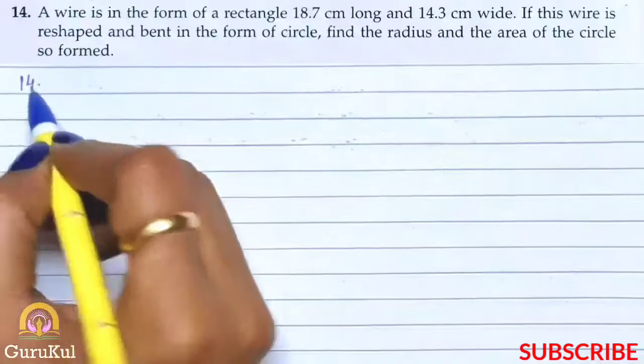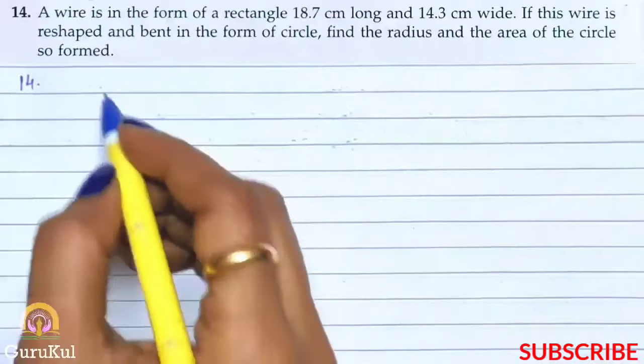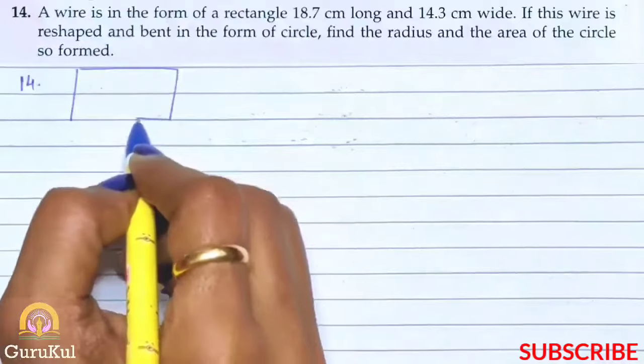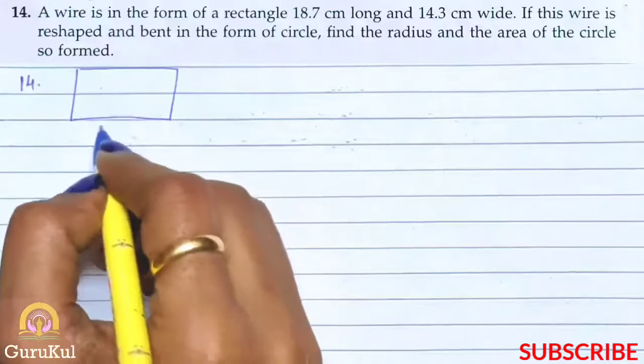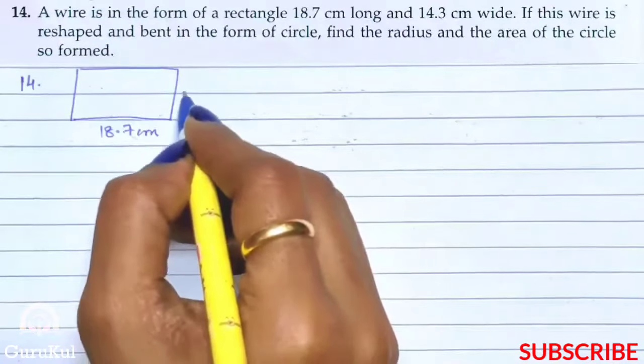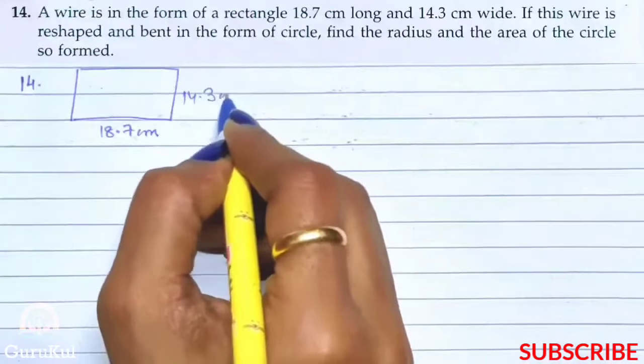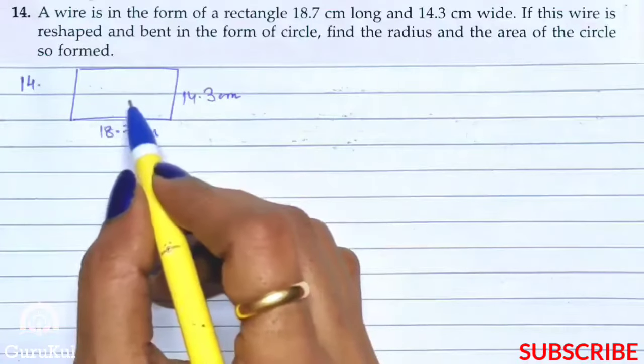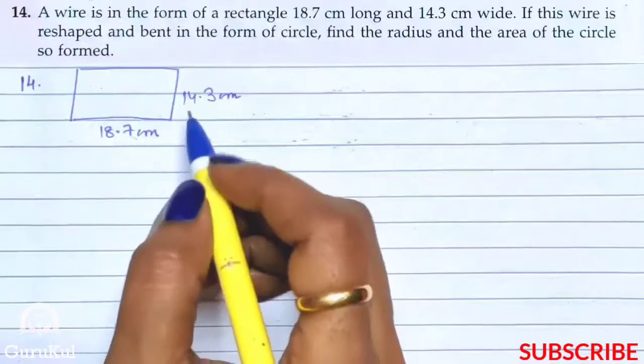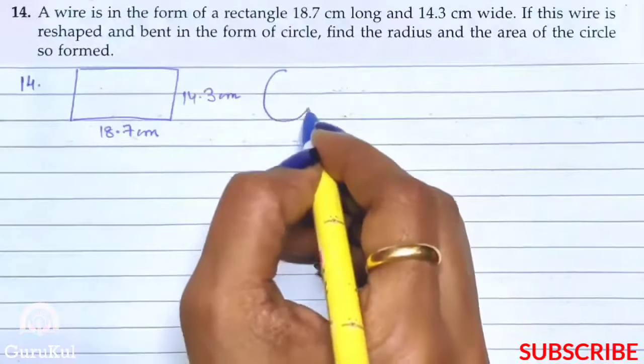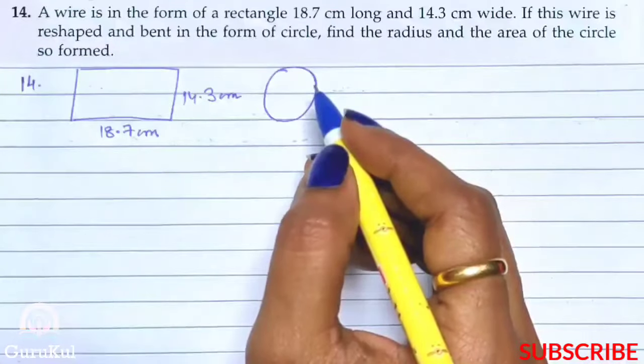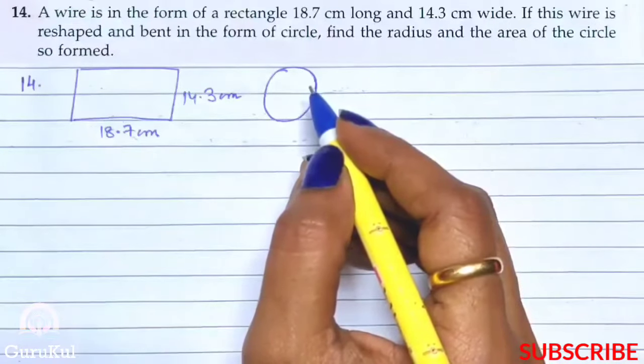Now question number 14. A wire is in the form of a rectangle. So this is the rectangle where the length is 18.7 cm and the width is 14.3 cm. So this is the shape of wire. Now if this wire is reshaped and bent in the form of a circle, we need to find the radius and the area of the circle so formed.